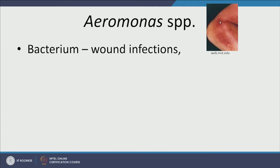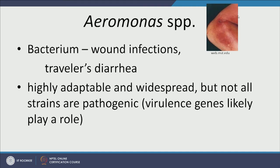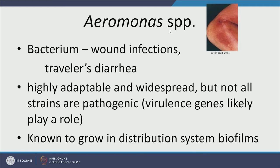Aeromonas is a bacteria that causes wound infection — if you have a small wound, Aeromonas can enter and infect. It also causes traveler's diarrhea; people believe that Delhi belly is often caused by this organism. It is highly adaptable and widespread, affecting skin cells and the intestine. Not all strains of Aeromonas species are virulent. Sadly, they are known to grow in biofilms, so in a drinking water system with intermittent flow and nutrient ingress, Aeromonas can grow in biofilms and infect us.